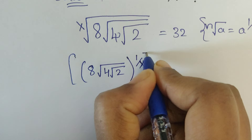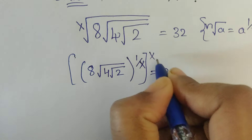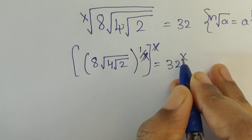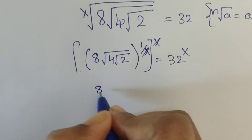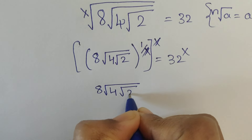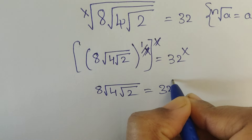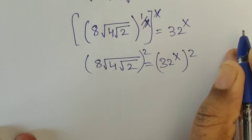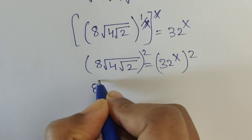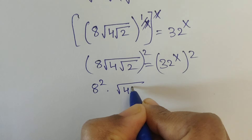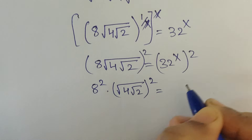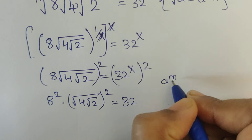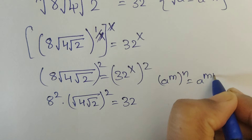Multiply by x on both sides as a power — so x gets cancelled. Now it will be: 8 square root of 4 square root of 2 equals 32 to the power of x. Now apply squares on both sides. We can apply the formula: a to the power of m, whole to the power of n, equals a to the power of m times n.